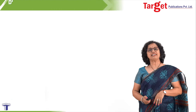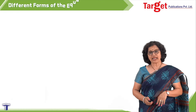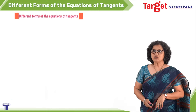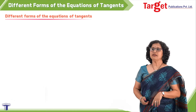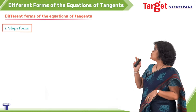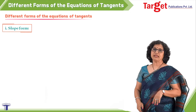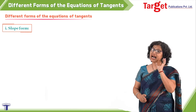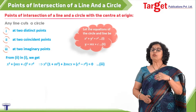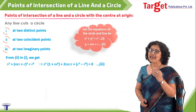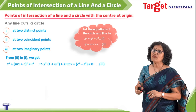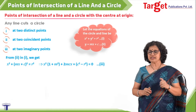Hello everyone. In this session we want to take different forms of equations of tangent. So let us start with different forms. The first one is the slope form, meaning we expect the answer to be in terms of slope, that is m. Before I start taking the actual equation, let us recall what we have done in our previous sessions.